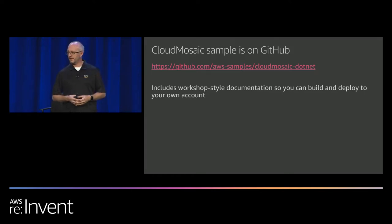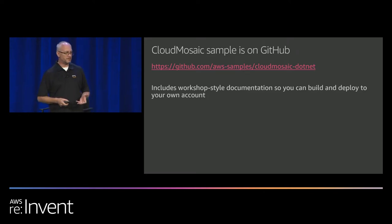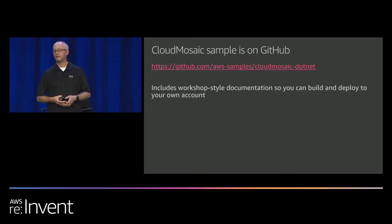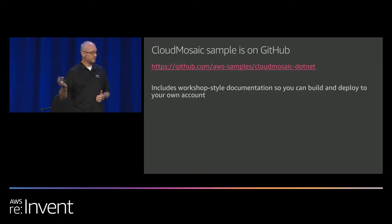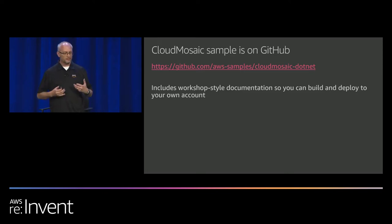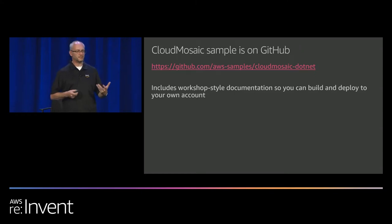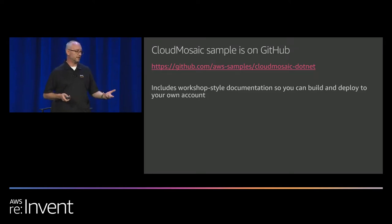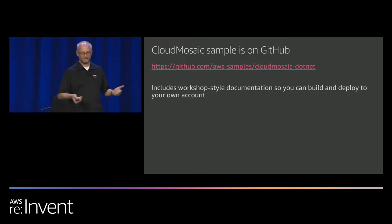The master branch comes with full workshop-style documentation that goes into how the application works and how it's architected. You can follow the steps from last year. The code for today's presentation is also there in a different branch. The demo application is designed for showing you how you can do a serverless .NET application on AWS — it's not going to teach you how to do mosaics.